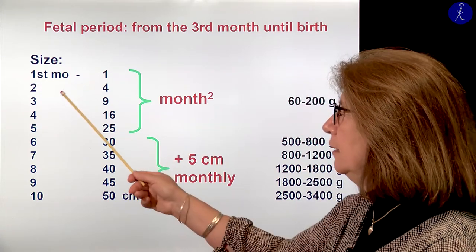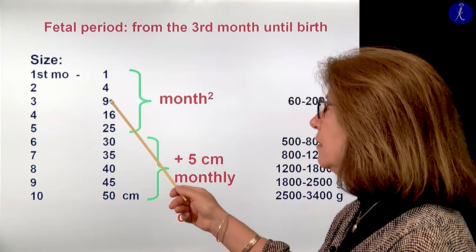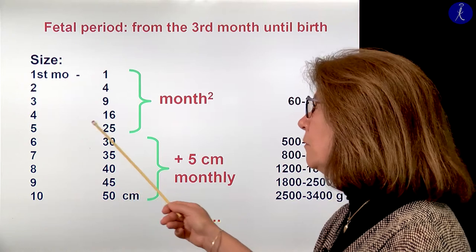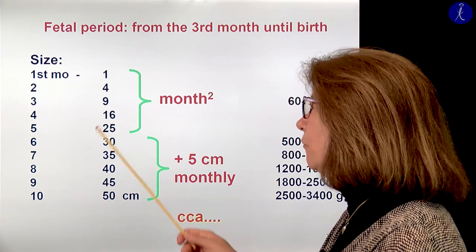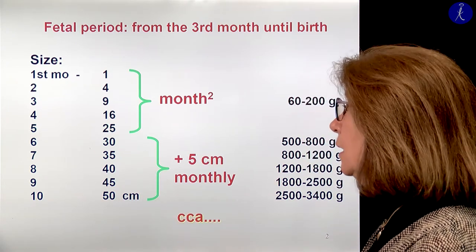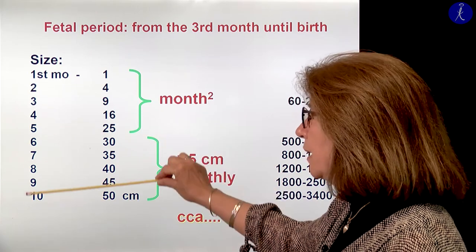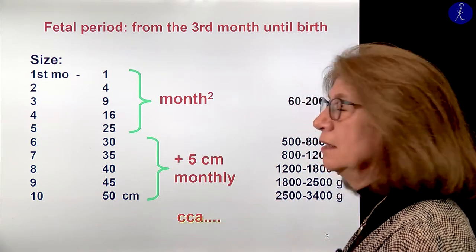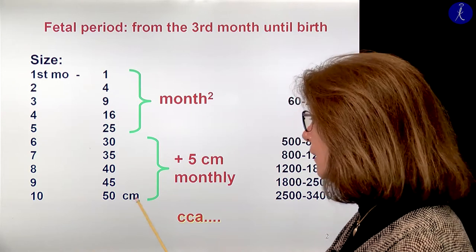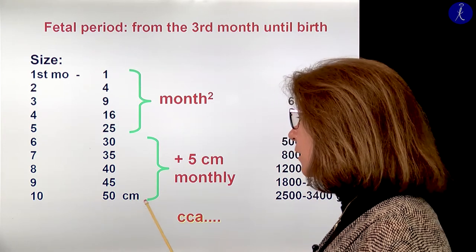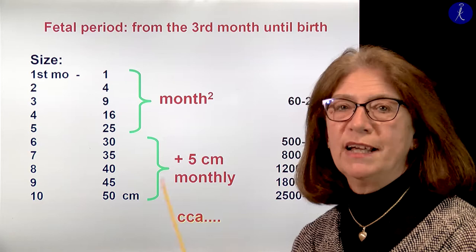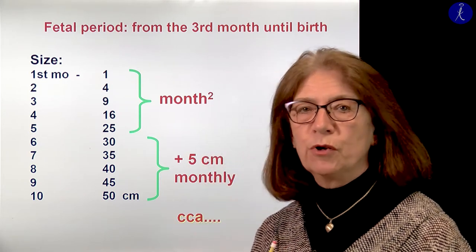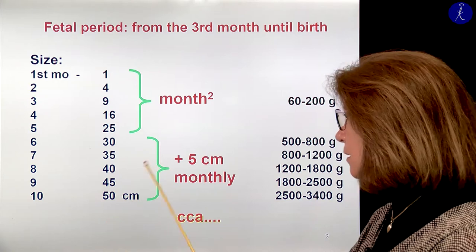So for example, in the third month the baby is around 9 cm long. Or in the fifth month, 5 by 5, it's 25 cm long. And in the next 5 lunar months, you have to add always 5 cm each month. So you get to the end with about a 50 cm long baby. That's about the average size of a newborn baby, 50 cm long.